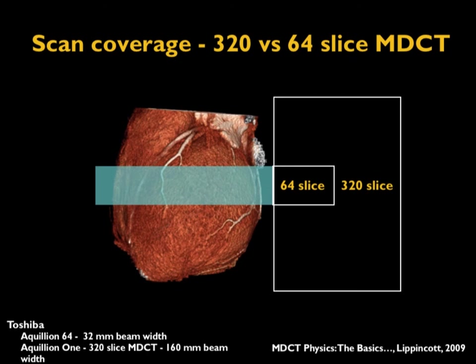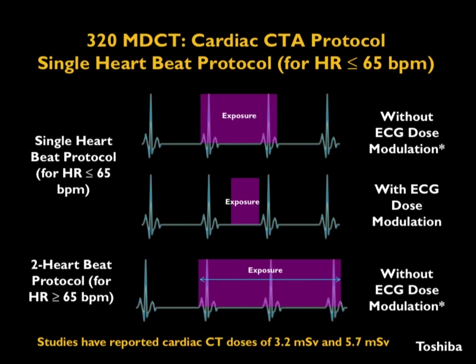One of the main technology advances is the wide detector, also called the volume detector. The 320-detector multi-detector CT is an example where the entire cardiac volume can be covered in a single gantry rotation. With 320 detectors each of approximately 0.5 millimeter size, a single gantry rotation can acquire nearly 160 millimeters (16 cm) of volume. When the patient's heart is positioned properly at the isocenter, it can be covered in one single sweep, avoiding overlaps and limiting radiation exposure to just one portion of the RR cycle.